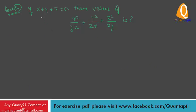Next question: if x plus y plus z is equal to 0, then find the value of the expression. If x plus y plus z is equal to 0, then we can consider x is equal to 1, y is equal to 1, and z is equal to minus 2. Put the values of x, y, and z in the expression.